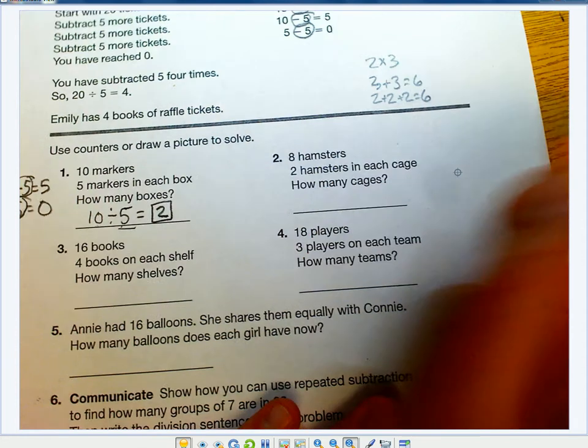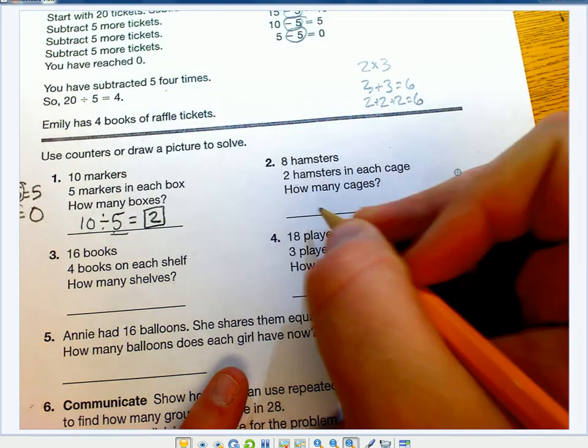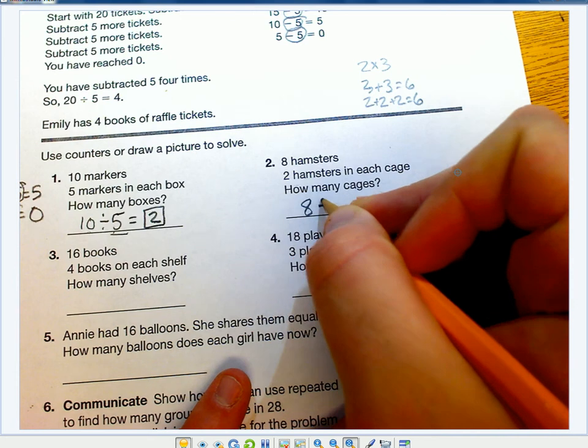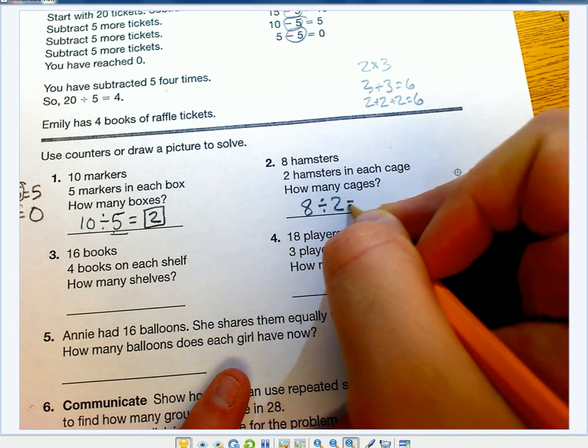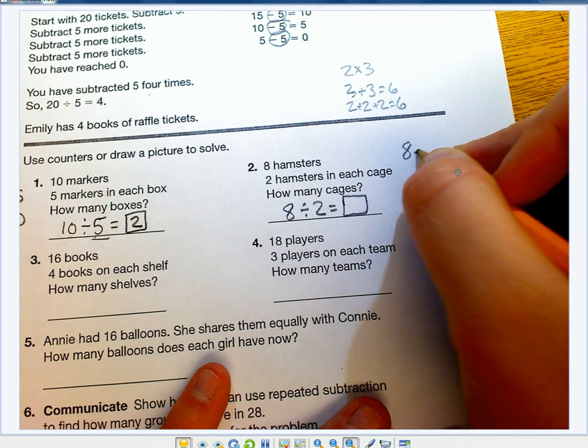Same thing for number 2. 8 hamsters, 2 hamsters in each cage, how many cages? That's going to be 8 divided by 2 equals how many?